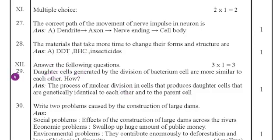The 29th question. Daughter cell generated by the division of bacterium cells are more similar to each other. Why? Because the process of nuclear division in cell that produces daughter cells that are genetically identical to each other and to the parent cell.